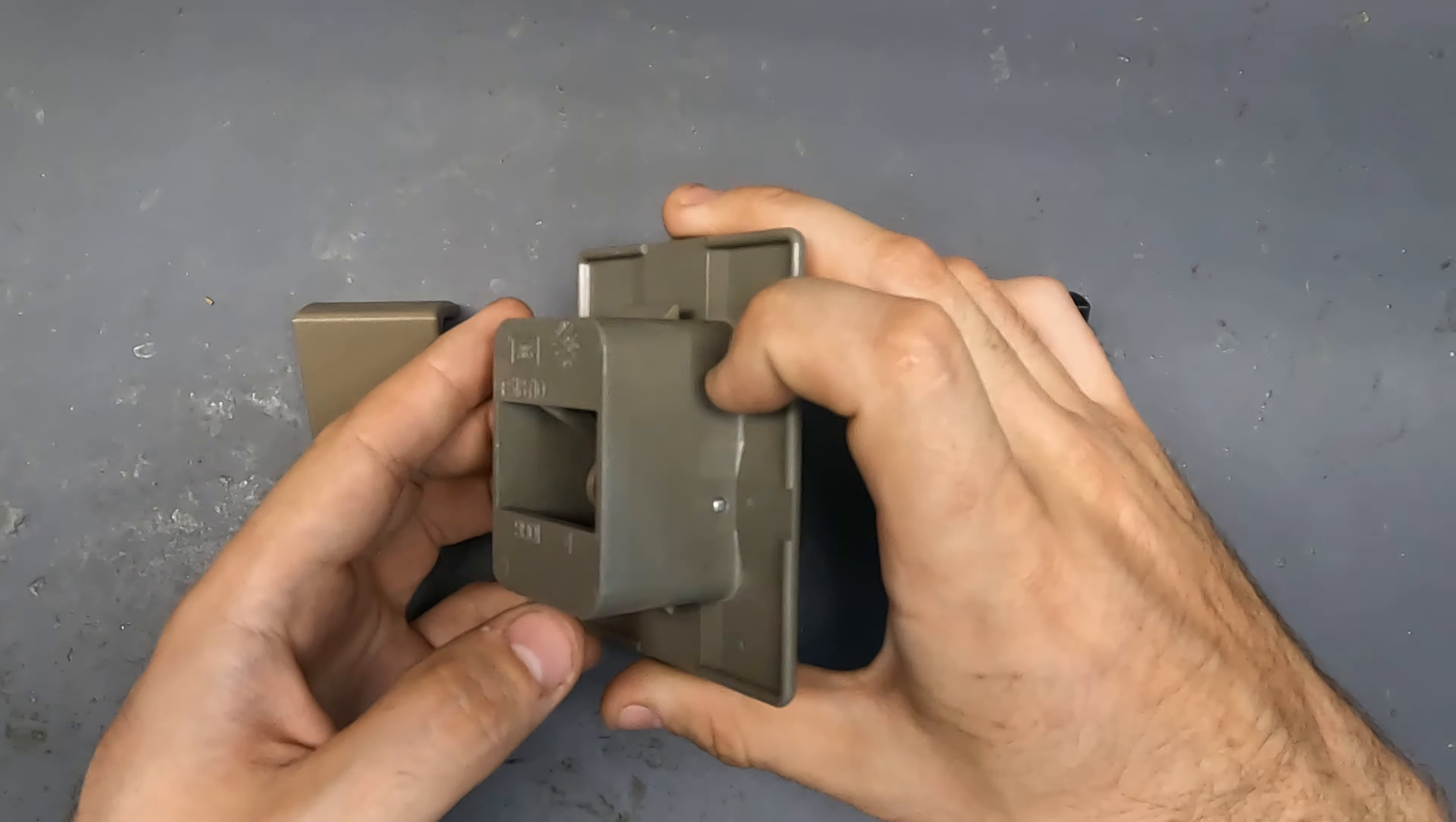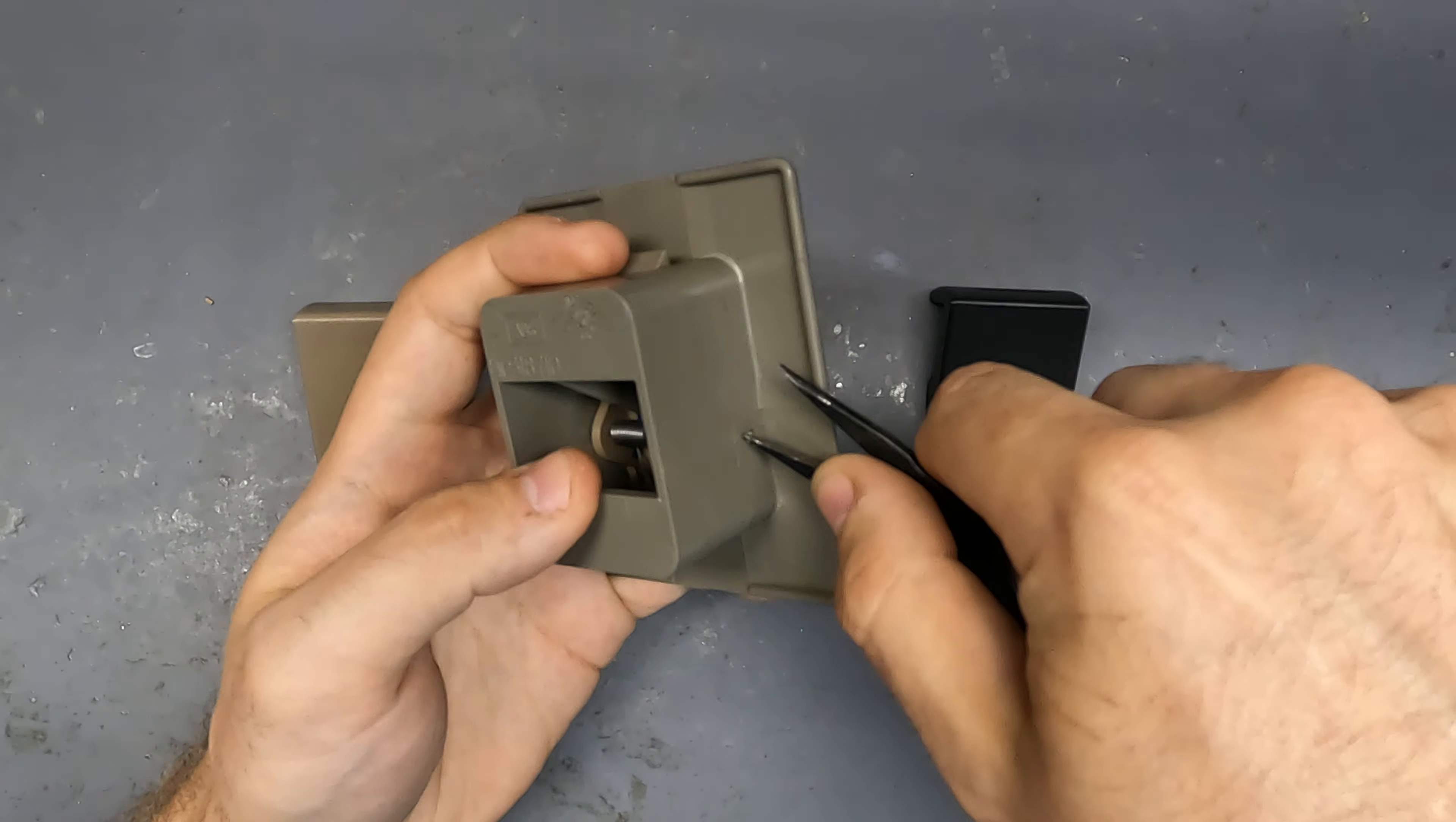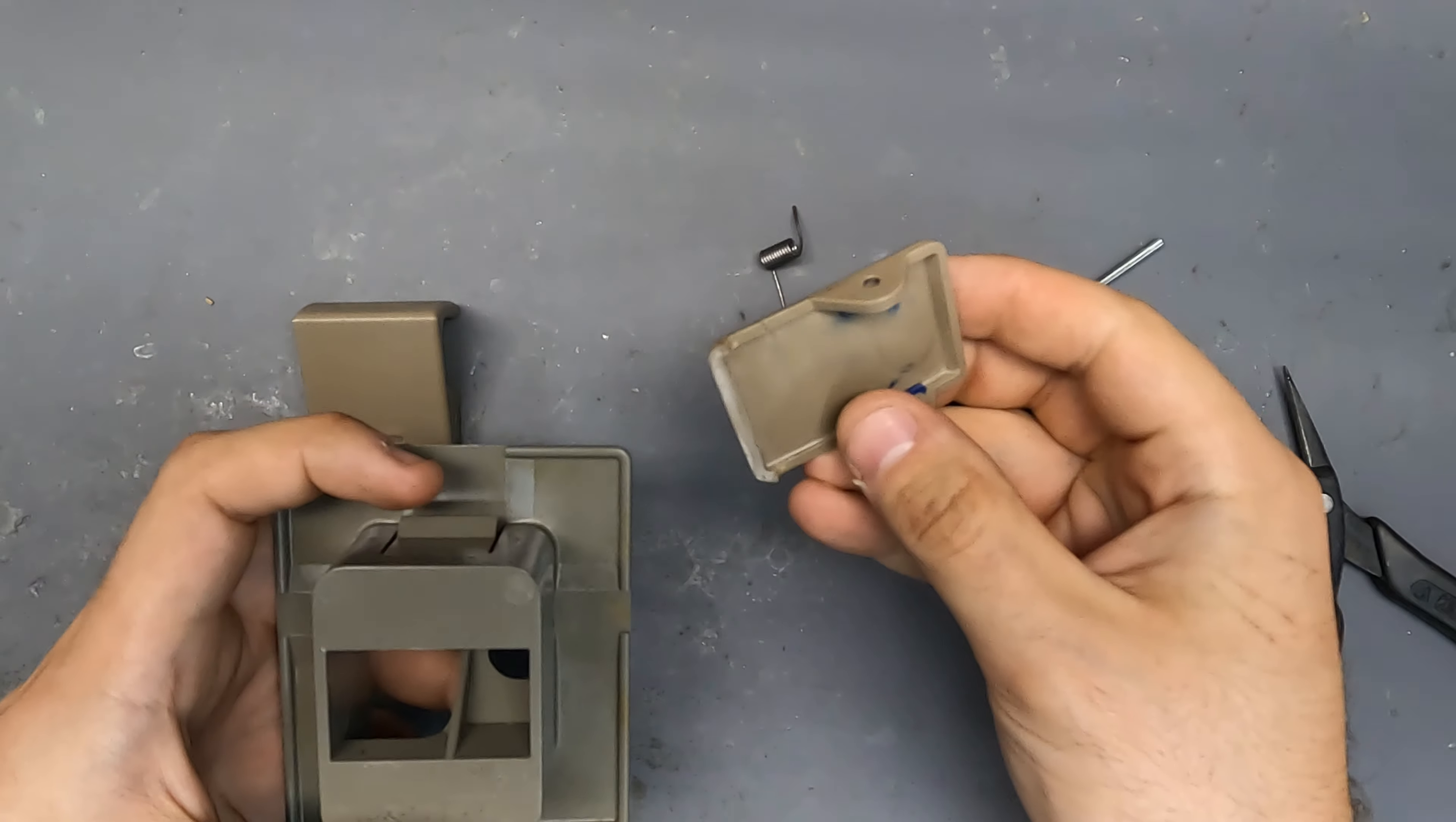To install the new latch, we're going to flip this over. You see in the back here there's this little pin and spring. We can push this pin out. It shouldn't be in there too tight, just whatever tool you can use should pull right out. The spring will drop free. Here's your spring and old broken latch.